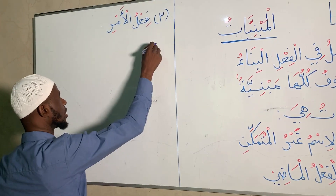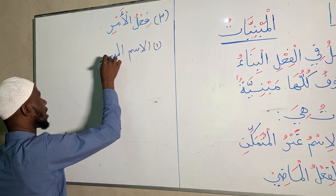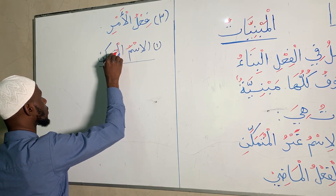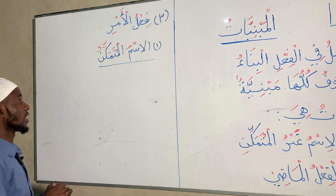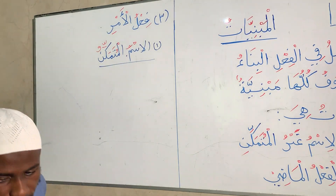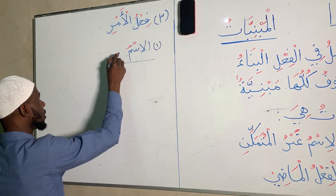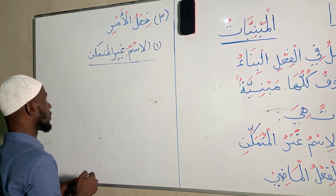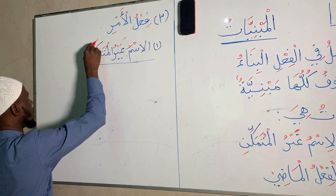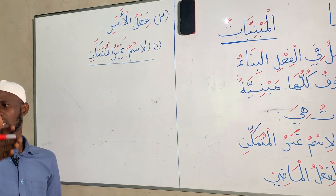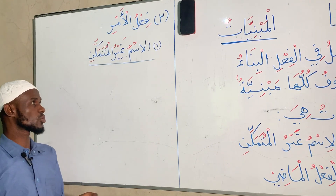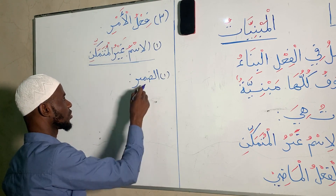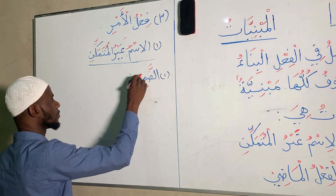Let's look at the first one: Al-Ismu Ghayru Al-Mutamakkin — the nouns whose ends are stagnant. There are about ten of them in Arabic language; we'll focus on the most beneficial ones for this class. The first is Al-Damir — pronoun. Al-Damir means pronoun.